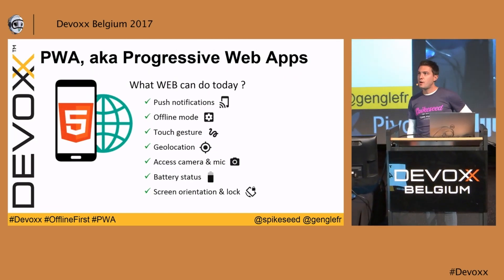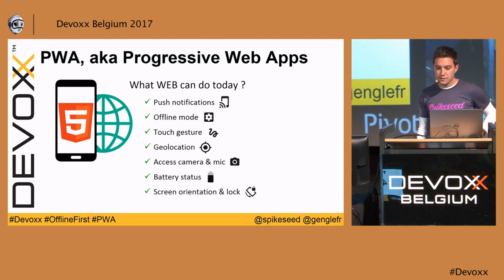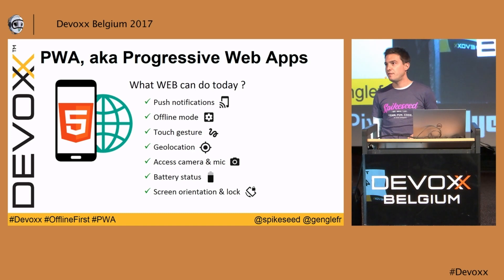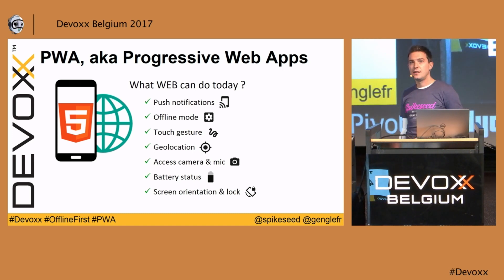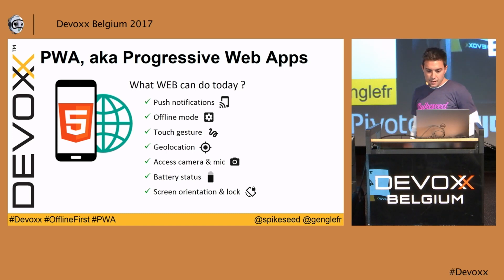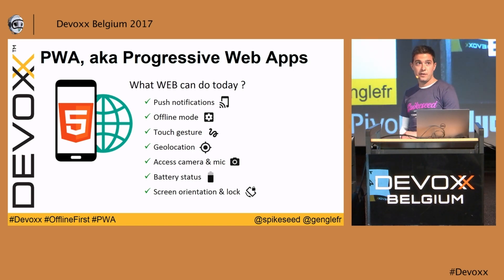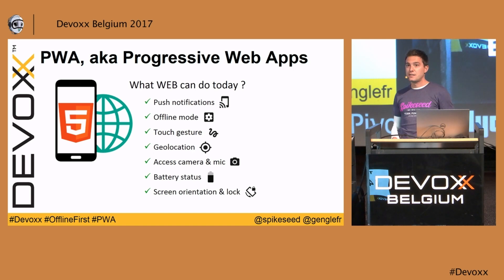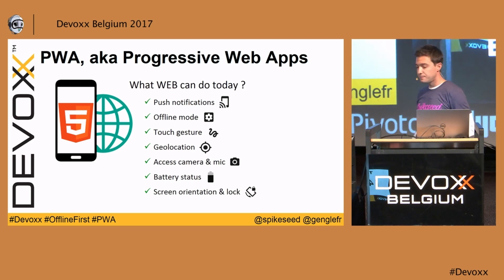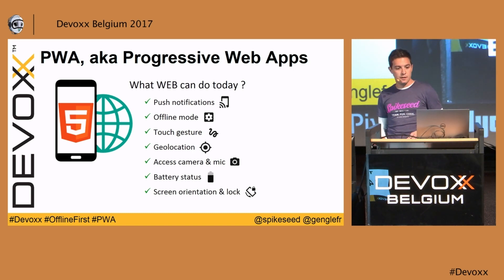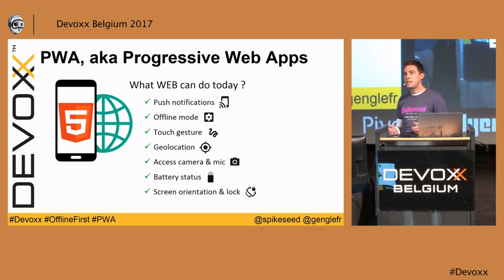You may have heard about progressive web apps. These are web applications that leverage the new web and HTML5 APIs to look and feel like native applications. Nowadays there are plenty of things the web can do thanks to new web and HTML5 APIs that were only available before to native applications, such as push notifications, offline mode, handling touch gestures, geolocation, and getting information about the device such as the battery. Progressive web apps are an opportunity to rethink how we build the web and learn from native applications.